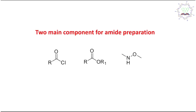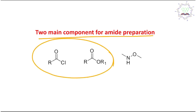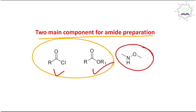There are two main components for amide preparation: one is a carboxylic acid derivative like acid chloride or ester, and the other is the hydroxylamine derivative. We are quite familiar with carboxylic acid derivative preparation but not with this hydroxylamine derivative preparation.